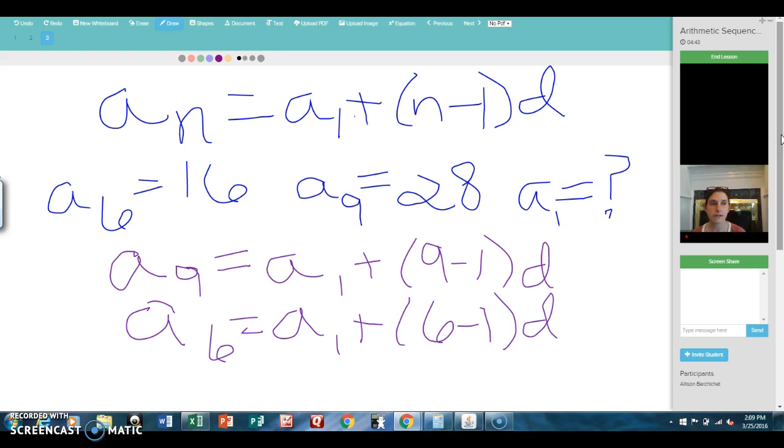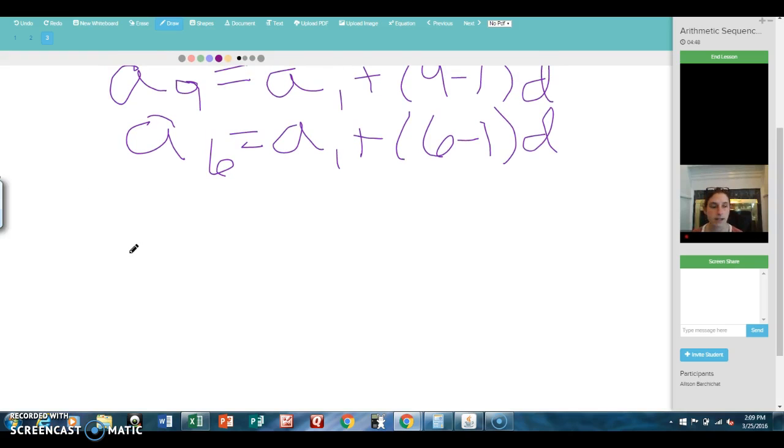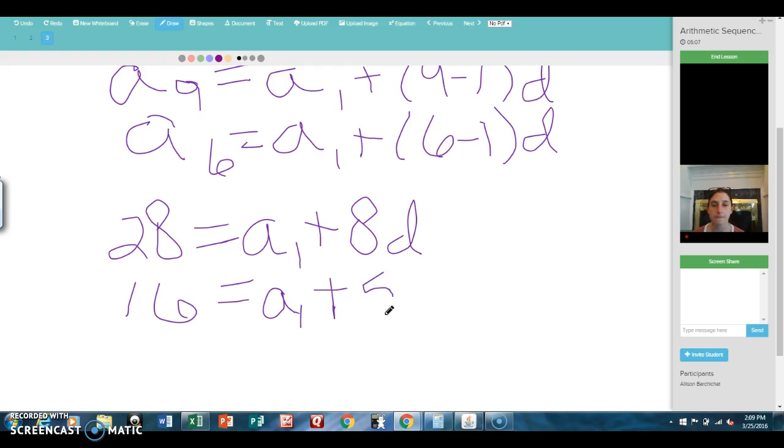So I'm going to fill in the numbers that we know. So it looks like this. The 9th term was 28 equals A1 plus 8D. And the second one, the 6th term is 16 equals A1 plus 5D. And what I've created here is a system of two equations.